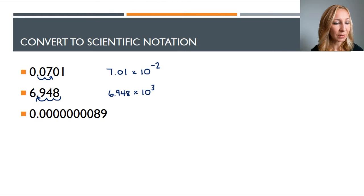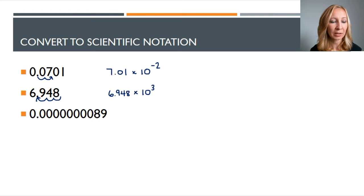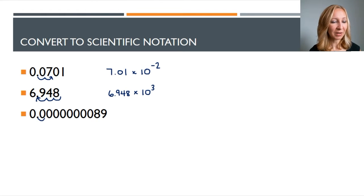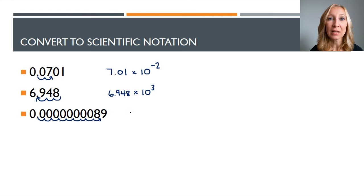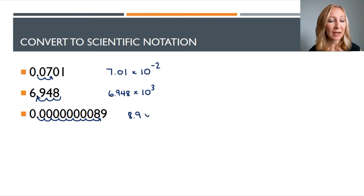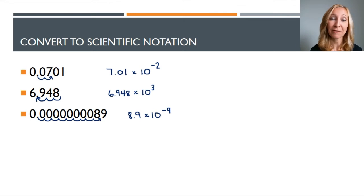Here we have point zero zero zero zero zero zero zero zero eight nine — a long number I wouldn't want to write frequently. It's eight point nine times ten to the negative ninth. Remember this is a very small number so the exponent has to be negative, and we moved the decimal nine times.